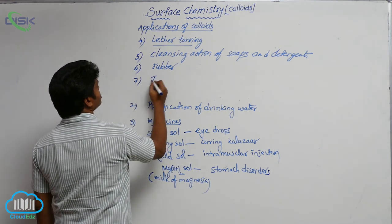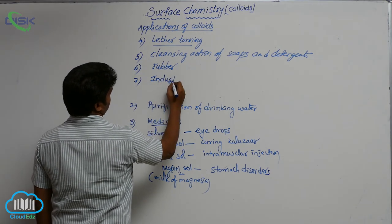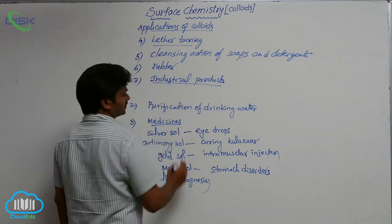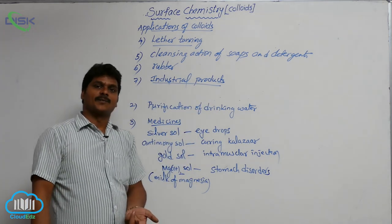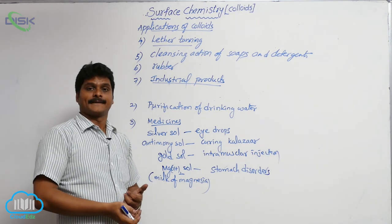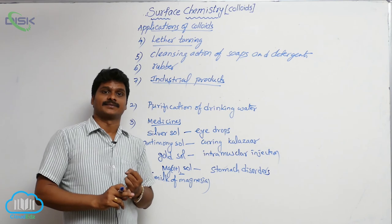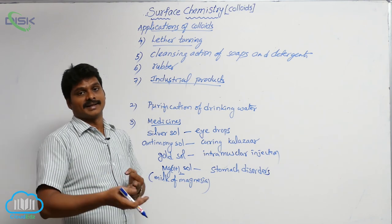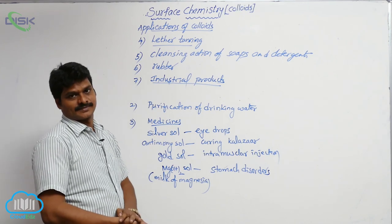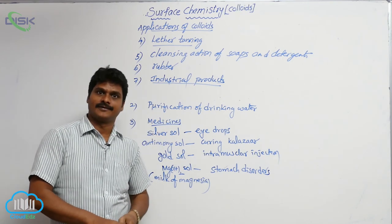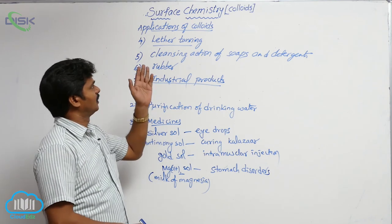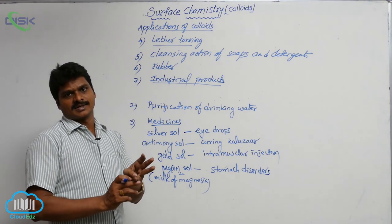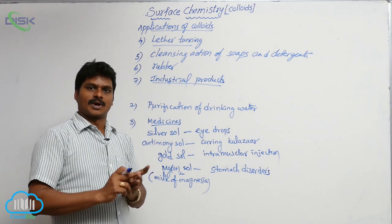Finally, many industrial products which we use in daily life are colloids — for example, paints, lubricants, and cement. These are all examples of colloidal solutions. These are the applications of colloids. The chapter on surface chemistry is now completed, which covered three main parts: adsorption, catalysis, and colloids.